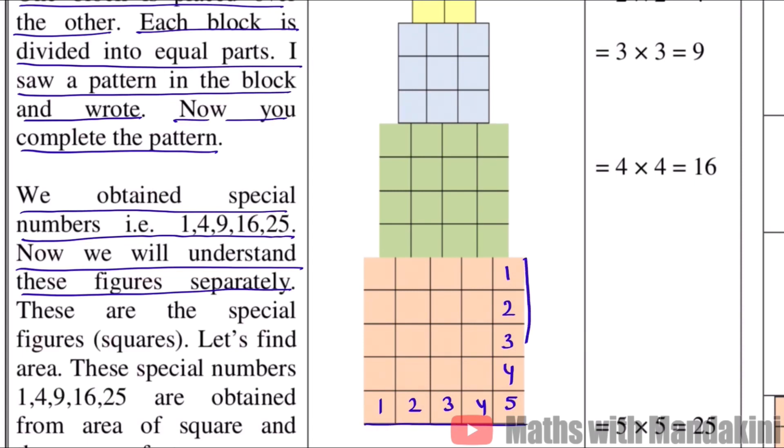Now when we multiply 5 parts by 5 parts, we get the area. The length and breadth are both 5. So 5 times 5 gives us 25. If we count the equal parts, it will come to 25.